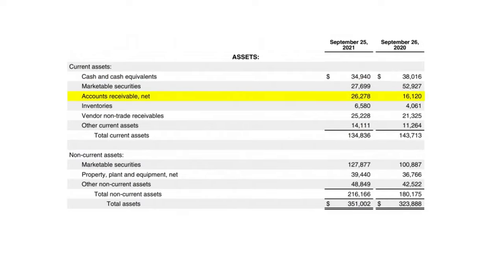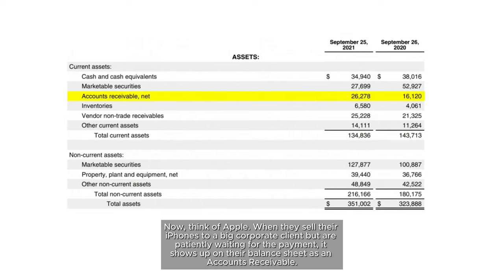Now let's dive into accounts receivable. Imagine you own a hamburger stand and a customer asks for $20 worth of burgers for his party, but tells you to send the bill and promises to pay next week. That $20 owed to your business for goods sold on credit is your accounts receivable. Think of Apple: when they sell iPhones to a big corporate client but are waiting for payment, that amount shows up on their balance sheet as accounts receivable.